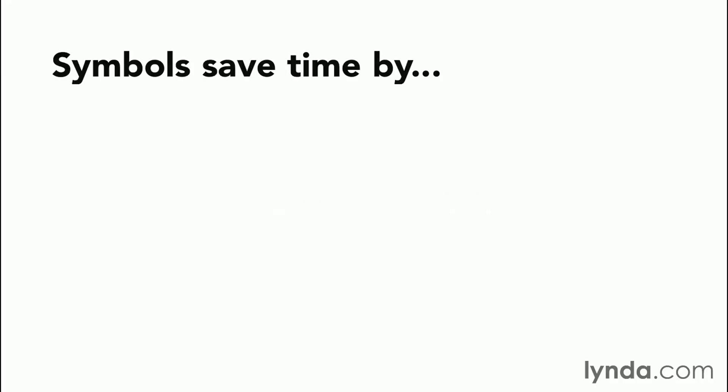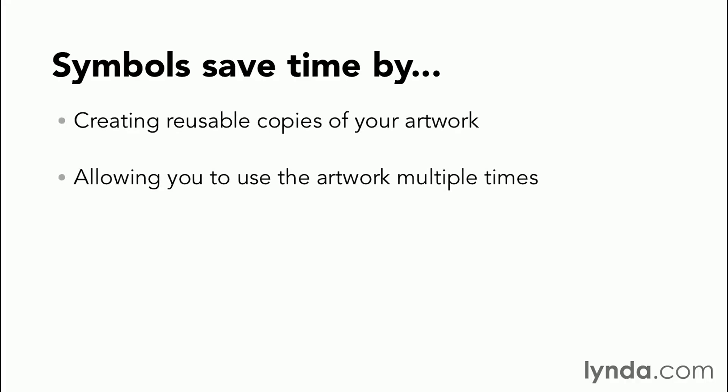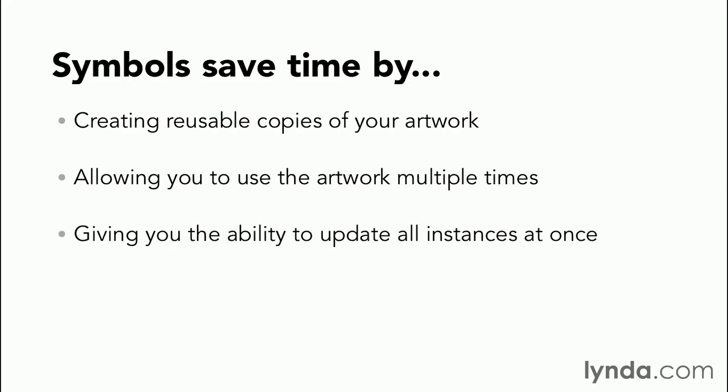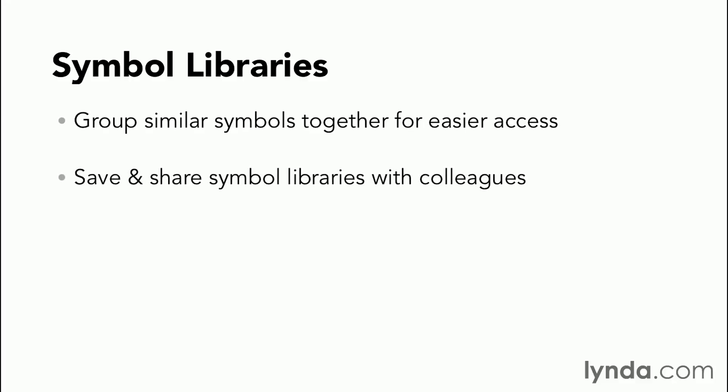How do they do that? Symbols save us time by creating reusable copies of our artwork that we can then use throughout our artwork multiple times — as many times as we want — and we can also update that artwork, all instances, all at once, anytime we want to. We can also create something called a symbol library, which is a collection of symbols that allows us to group symbols together for easier access. You can then save and share those symbol libraries with colleagues, and you can also easily load libraries from the web that you find online.